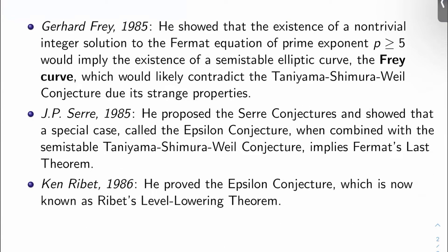Jean-Pierre Serre in 1985 proposes the Serre conjectures, which we will talk about at length. Once I get done uploading these early videos I'm going to be jumping back into some newer content — we're going to be talking a lot about the Serre conjectures. He showed that a special case of the Serre conjecture, called the epsilon conjecture, when combined with the semi-stable Taniyama-Shimura-Weil conjecture, implies Fermat's last theorem.